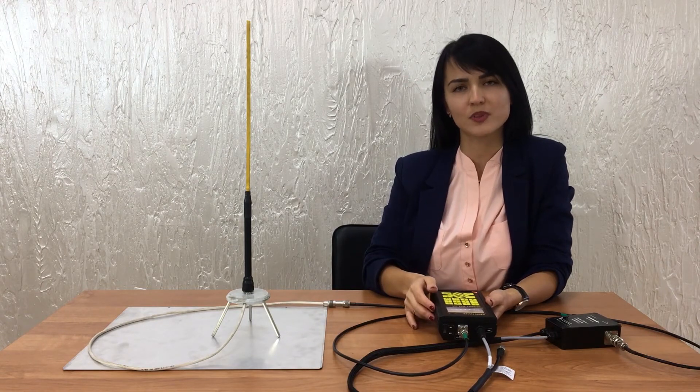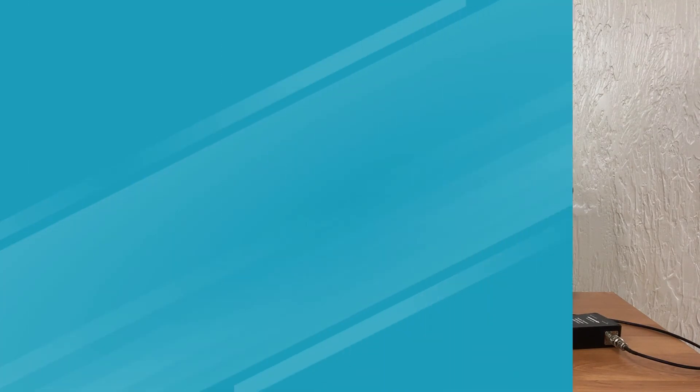With help of new GADSS tester GT1, an inspector can test the antenna and antenna feeder system to assure that ELT works properly and it is reliable in emergency situations if such occurs. We wish you be safe and in good health. Subscribe to our channel not to miss our new videos and you will find out more about our new GADSS tester GT1.